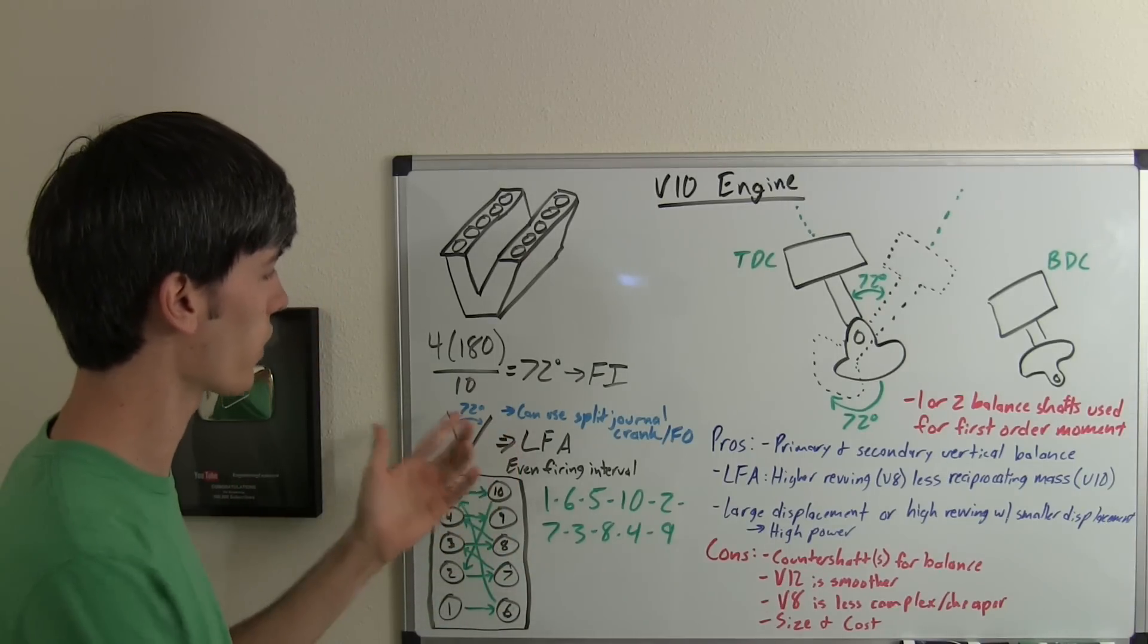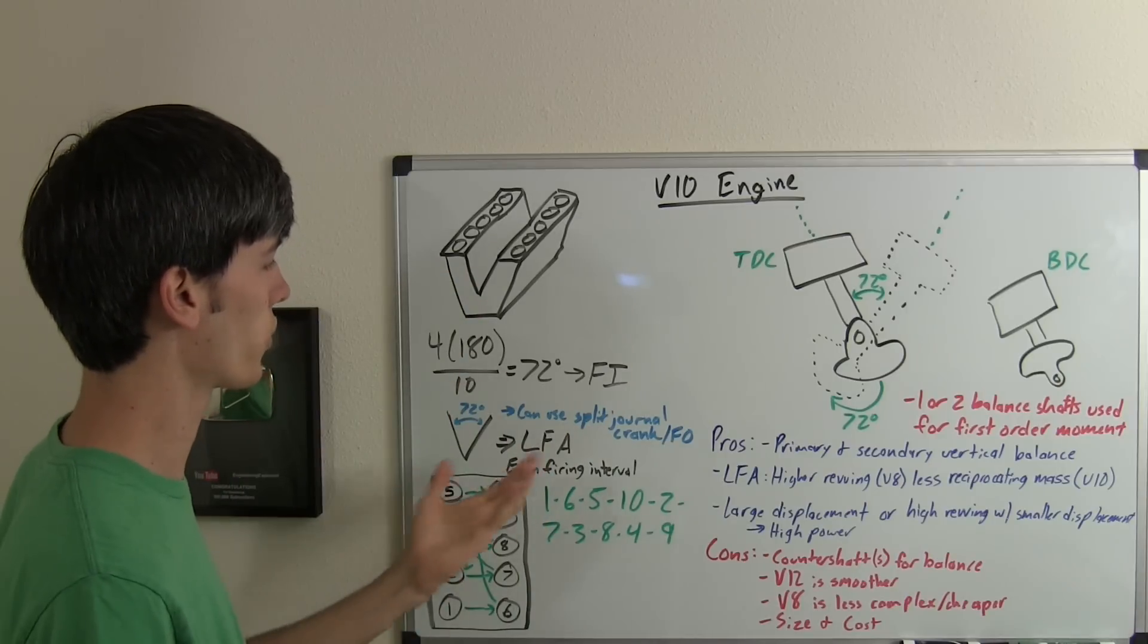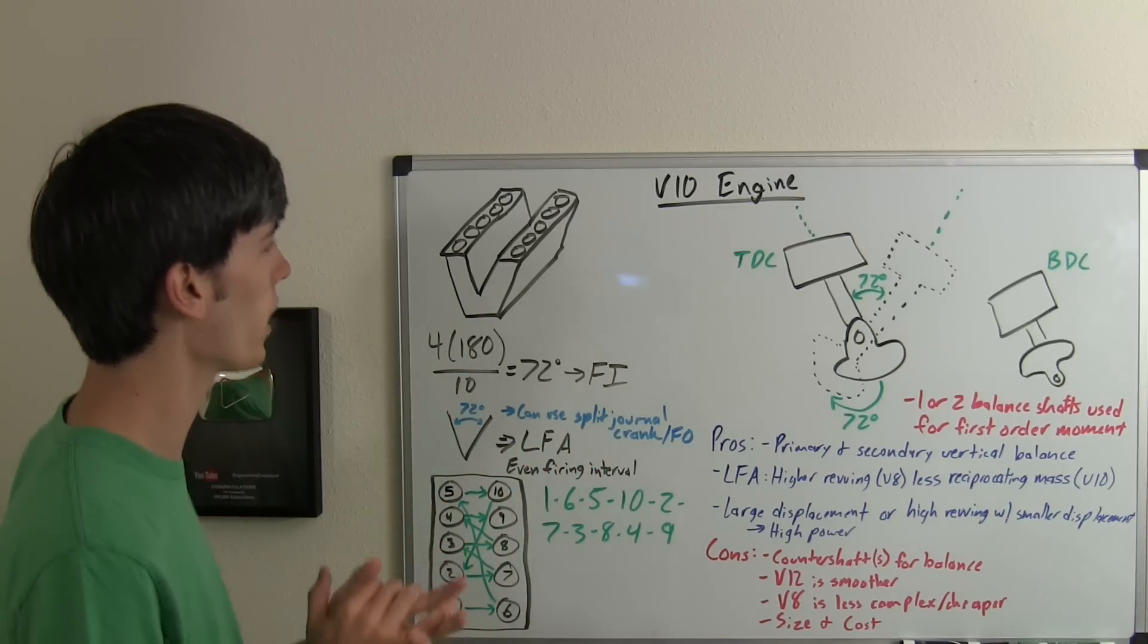In the Lexus LFA, they actually use a 72 degree split in the V, and that's done so that they can have an even firing interval.